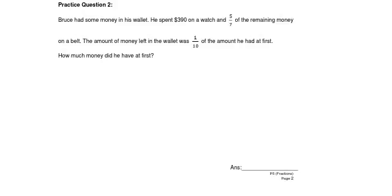Bruce had some money in his wallet. He spent $390 on a watch and five-sevenths of the remaining money on a belt. The amount of money left in the wallet was one-tenth of the amount of money he had at first. How much money did he have at first? We draw a model to represent the amount of money he has at first.